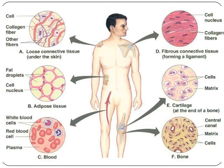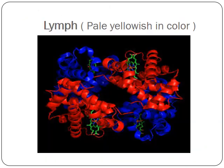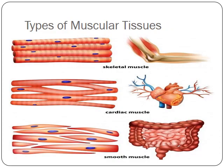Bones are hard but porous because they contain blood vessels, which create space within them. The cells are called osteocytes, and they contain collagen with calcium phosphate. Bones help to give structure to the body and also protect our delicate organs. In the picture you can see different structures along with blood vessels, and the pale yellowish color visible is lymph.